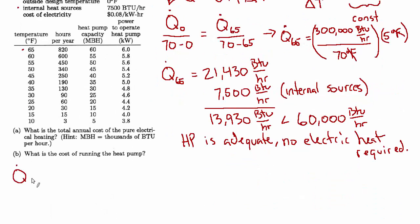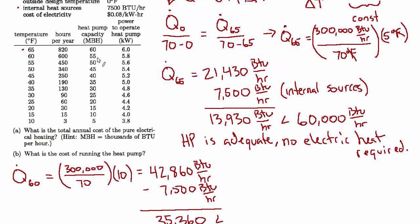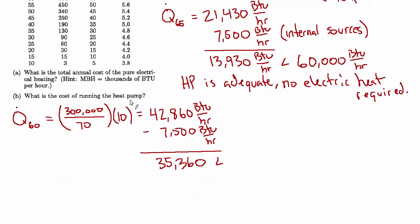We have 7500 BTUs per hour of internal heat sources. So we'll subtract that since we're getting that for free. That's heat that's going on inside regardless. And that difference then is 13,930. And now we'll notice that the capacity of the heat pump at that outside temperature is 60,000 BTUs per hour, which is far greater than 13,930. So the heat that we need is much less than the capacity of the heat pump. So we don't need to run the electric heat. The heat pump is adequate by itself.